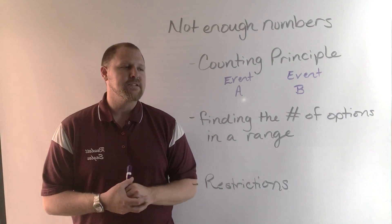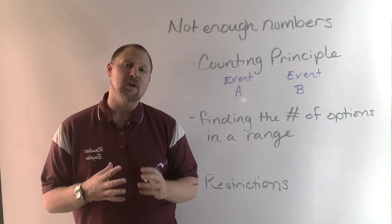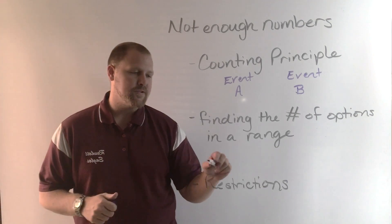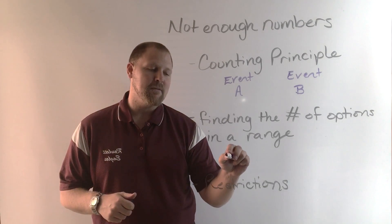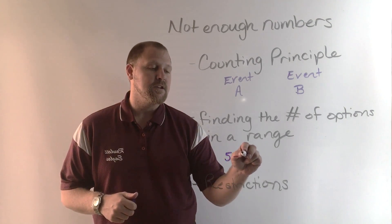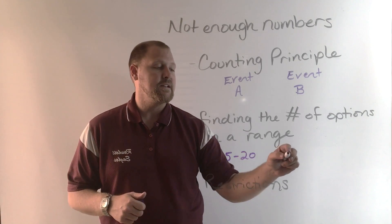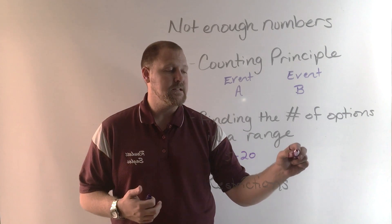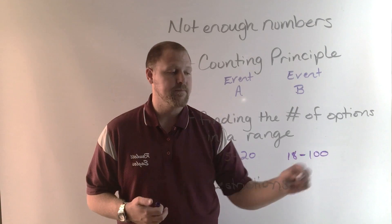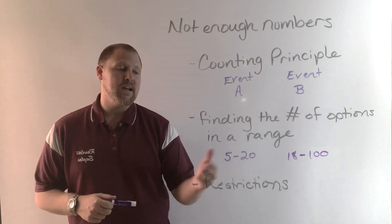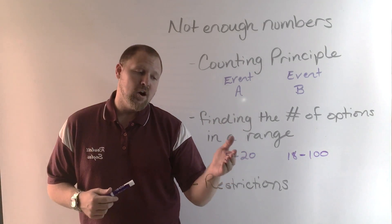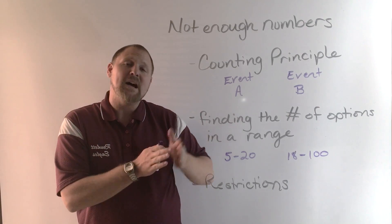The next thing we have is finding the number of options in a range. So a couple different examples: let's say we have 5 to 20 and 18 to 100. We need to find out how many numbers are from 5 to 20.